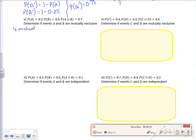I know that A or B is 0.7. I know that A and B is 0.2 and 0.5, so they're both 0.7.